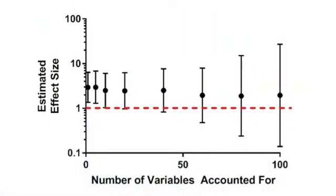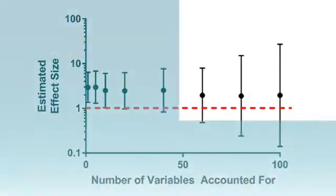I simulated some data looking at the relationship between pot use and depression, assuming a pretty large raw effect size. I also simulated 100 variables that are linked with pot use but not depression. As you can see, as I adjust for more and more of those variables, my estimate of marijuana's link to depression gets less and less precise. This problem gets bigger the smaller the study is. Eventually, the confidence intervals are so wide that you have no idea what's going on — you've shot yourself in the foot with your fancy statistics.